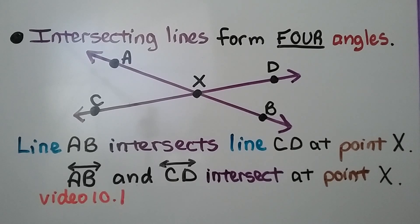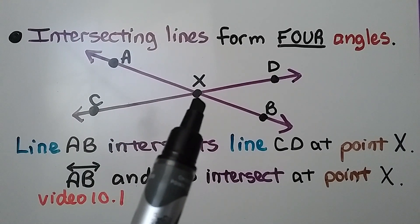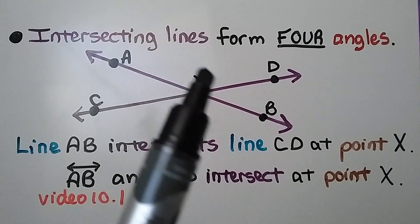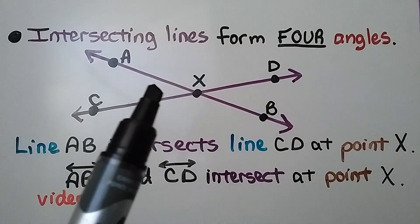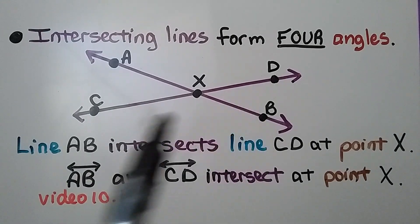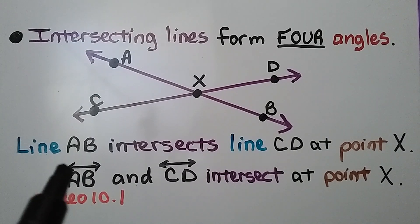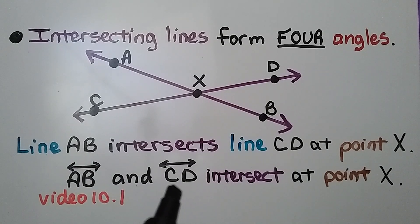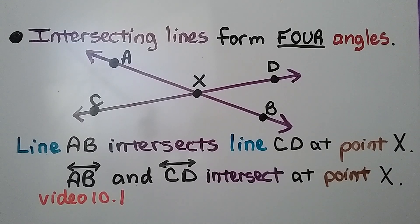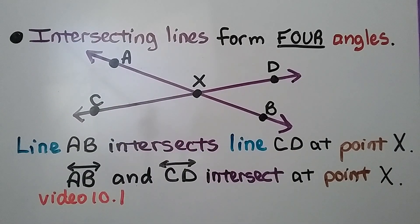Intersecting lines form four angles. This line is intersecting this line at point X, and it made four angles: one, two, three, four. Line AB intersects line CD at point X. We can write it as capital A-B with the symbol for a line — a bar with two arrowheads — and line CD with capital letters C-D with a bar with two arrowheads.